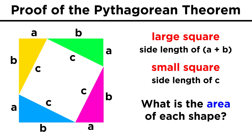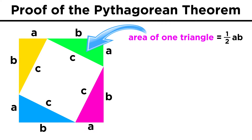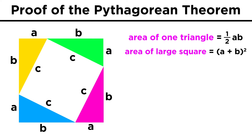We can calculate the areas of all of these shapes. We know that the area of one of the triangles will be one-half base times height, or one-half A times B. The area of the large square will be the side length squared, or A plus B quantity squared, and the small square will have an area of C squared.